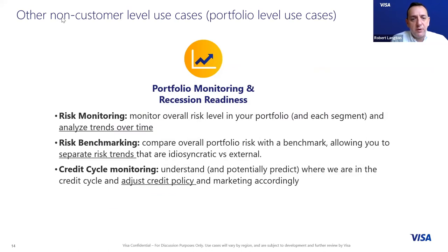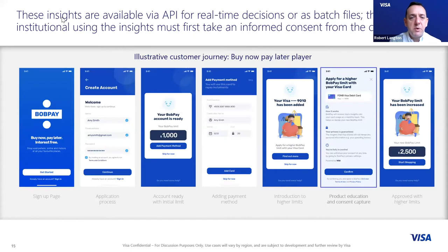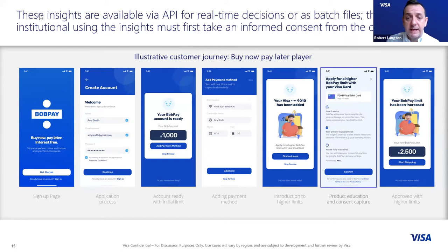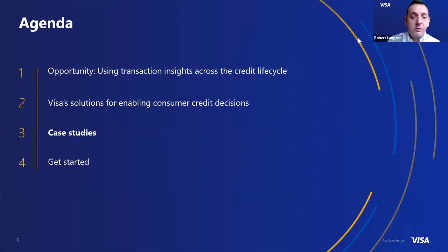There's also a range of high-level services available through a full market view, including benchmarking against peers — understanding where you are with regard to credit cycles and whether risks are increasing at a country or regional level. Here's an example customer journey using a buy now, pay later company called Bob Pay. They capture customer application details, link in a payment method capturing the 16-digit card number, confirm the customer consents to data being referenced as part of the journey, and then receive a go/no-go decision on the application.